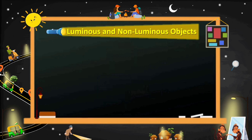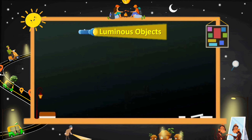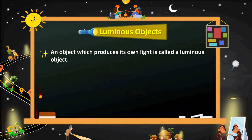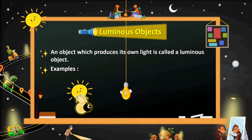Let's see what are luminous and non-luminous objects. An object which produces its own light is called a luminous object. Some examples of luminous objects are the sun, a bulb, and fireflies — all of which produce their own light.